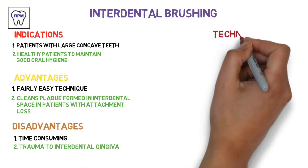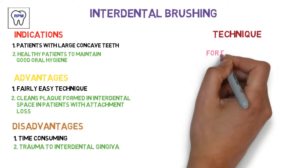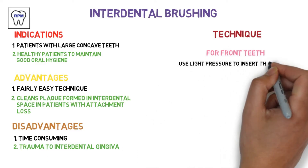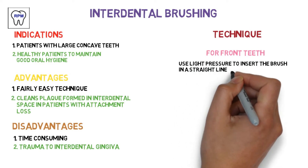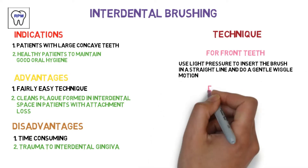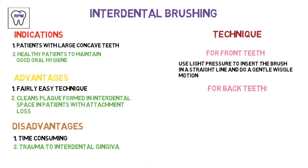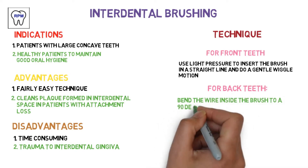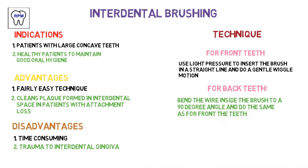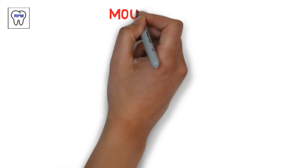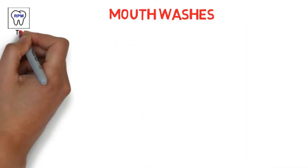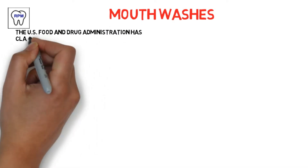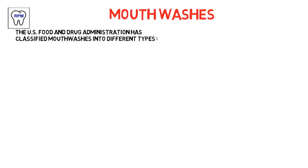Disadvantages: it is time-consuming and it may cause trauma to the interdental gingiva. Technique: for the front teeth, use light pressure to insert the brush in a straight line and do a gentle wiggle motion. For back teeth, bend the wire inside the brush to a 90-degree angle and do the same as for the front teeth.